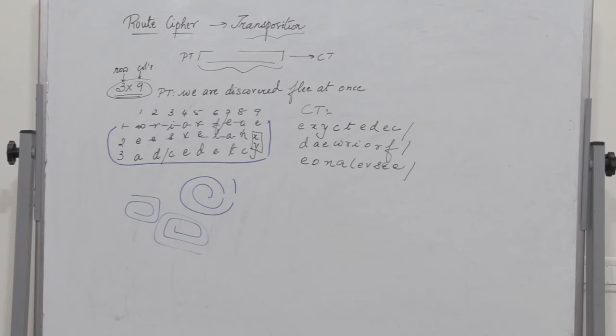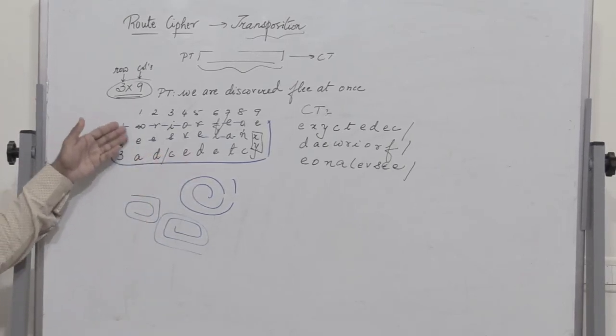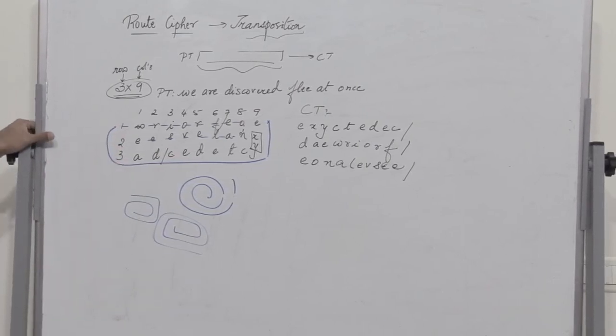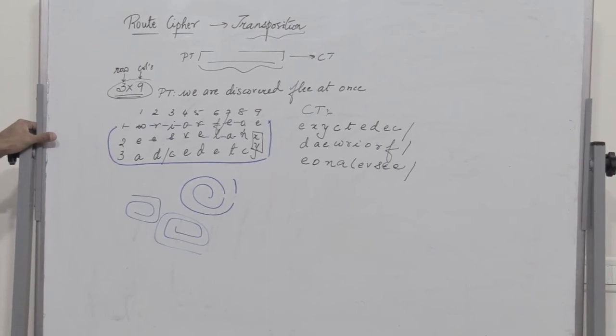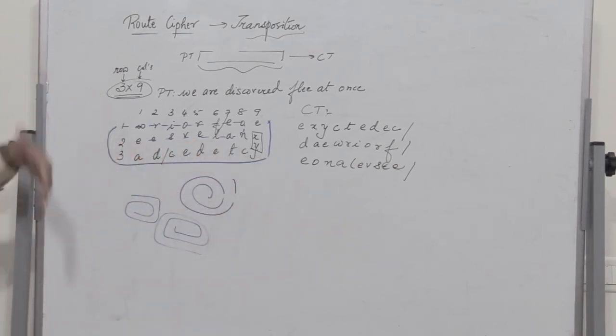So this is how we can get the ciphertext by using a root cipher where we define the root by writing all the alphabets of the plain text in the form of a grid. So I have chosen a three cross nine grid. You can choose a grid say four cross five or any grid of your choice.